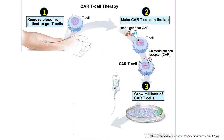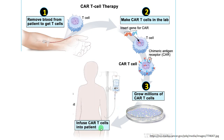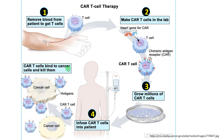Step three involves further culturing of the CAR T-cells to produce millions of cells. After this scale-up process, in step four, the genetically engineered CAR T-cells are infused back into the patient. In step five, the CAR T-cells inside the patient divide and then bind to cancerous cells with high efficiency and specificity, thereby killing the cancerous cells and ultimately curing the disease.